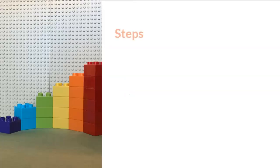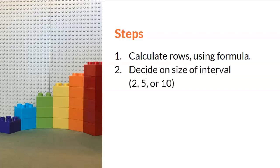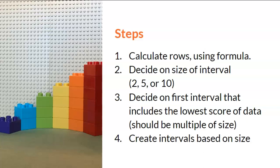I would like to summarize the steps in creating a grouped frequency table. You will notice that the steps tend to correspond with the rules we discussed earlier. First, calculate the possible rows using the formula we just reviewed. Second, decide on the size of the interval — you will select either 2, 5, or 10, which refers to rule number 2. Third, decide on the interval that includes the lowest score of the data set, referring back to rule number 3 — this first interval should be a multiple of the interval size selected in step 2. Fourth, create all the intervals needed based on the interval size selected that will account for all values in your data set.